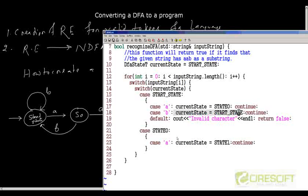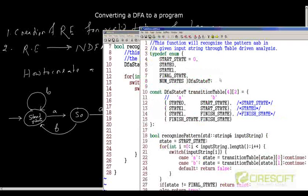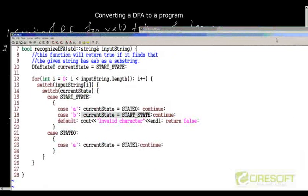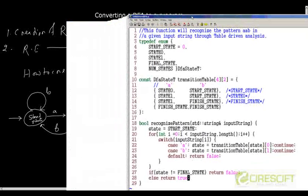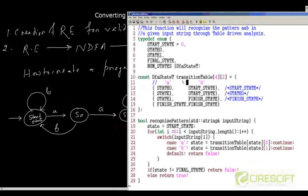Now there is another way of doing this also. That is called as table driven method of writing a DFA program. So this is a table driven method. So what we do here is we create what we call as a transition table.